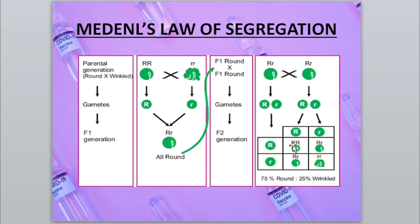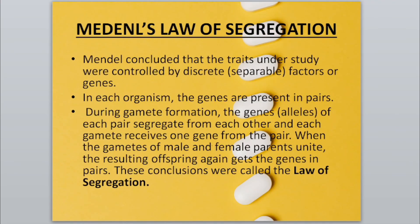Three genotypes are produced: two are the same. Three genotypes and two phenotypes — the physical expression of genes — are formed. In short, Mendel said the genes are responsible for traits travelling to the next generation. During meiosis, when chromosomes separate, genes of each pair also segregate during gamete formation, and each gamete collects one gene. When male and female parents' gametes reunite, the resulting offspring again gets genes in pairs — this is Mendel's Law of Segregation.